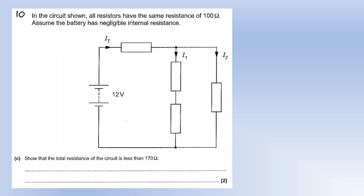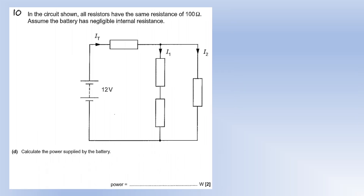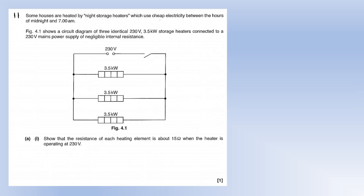To show total resistance is less than 170 ohms: the two series resistors in the parallel branch add to 200 ohms, giving a parallel section resistance of 200/3. Adding the series resistor of 100 ohms gives 100 + 200/3 = 166.7 ohms, which is clearly less than 170. Power supplied by the battery: P = V²/R = 12²/166.7 ≈ 0.86 watts.